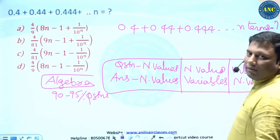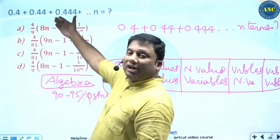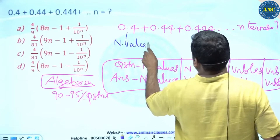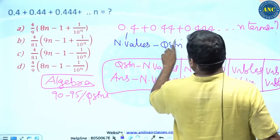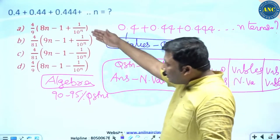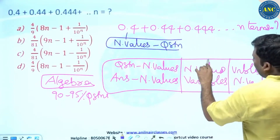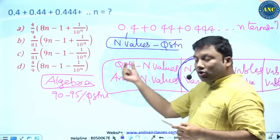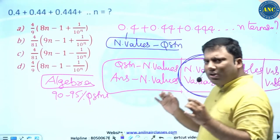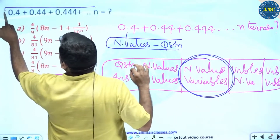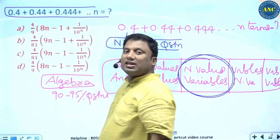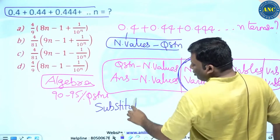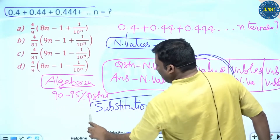Now let us see which pattern this problem belongs to. 0.4, 0.44, 0.444 — all these are numerical values, so the question contains numerical values. The answer contains variables, which means this question comes under the category: question contains numerical values, answer contains variables.